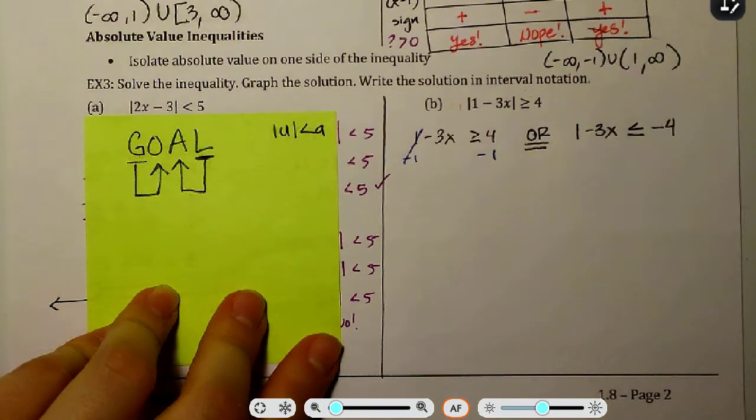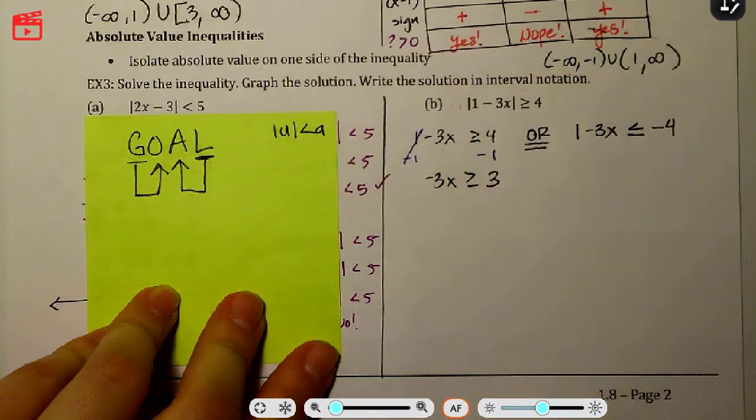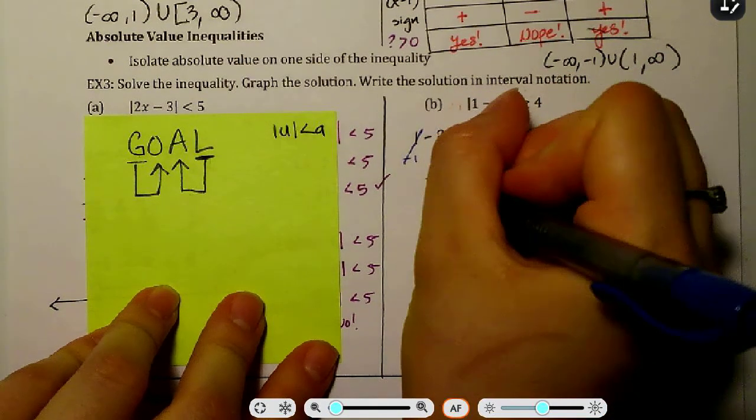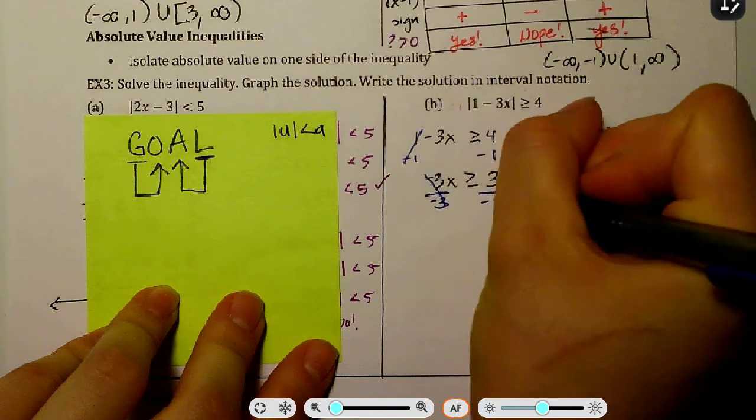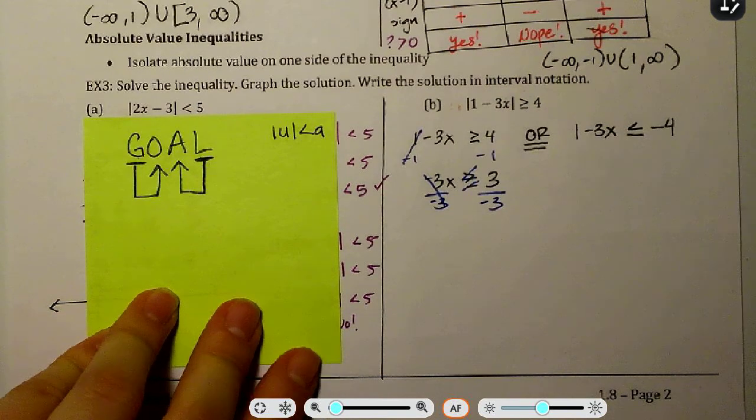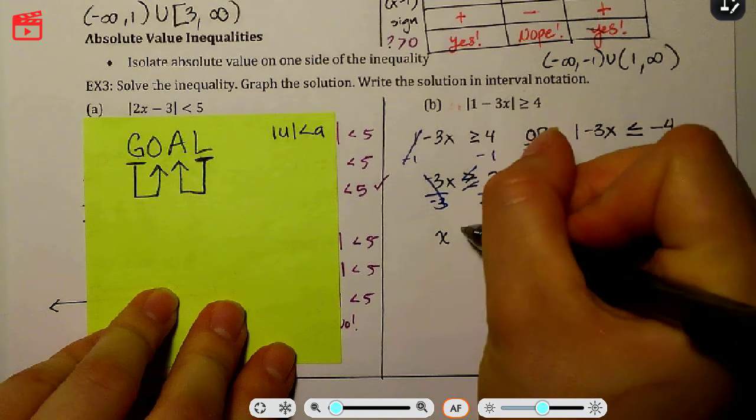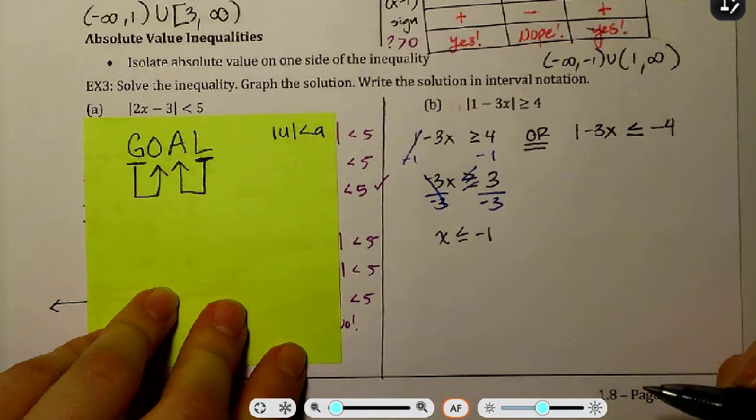Minus 1. Minus 1. Negative 3x is greater than or equal to 3. Dividing, ooh, by a negative. Dividing by negative means we got to flip our sign, and we flip it on the step. I'll be checking for that in your work. And there we go.